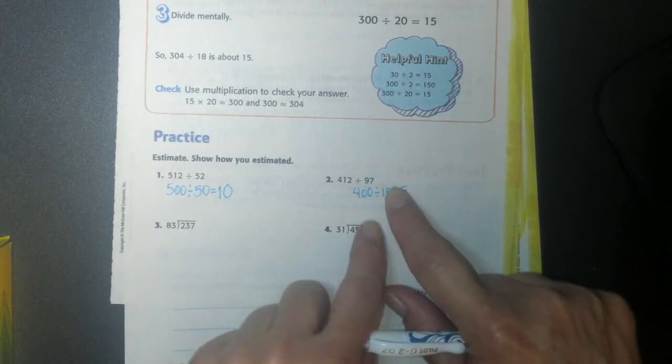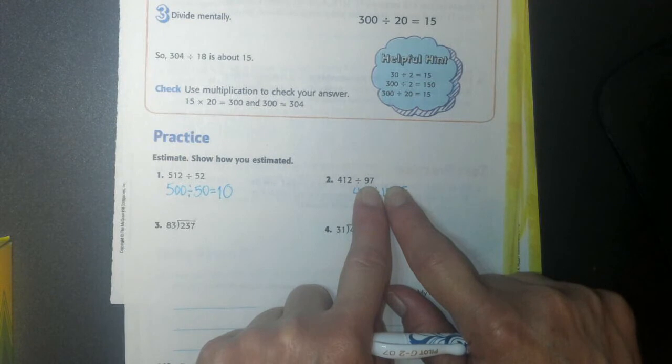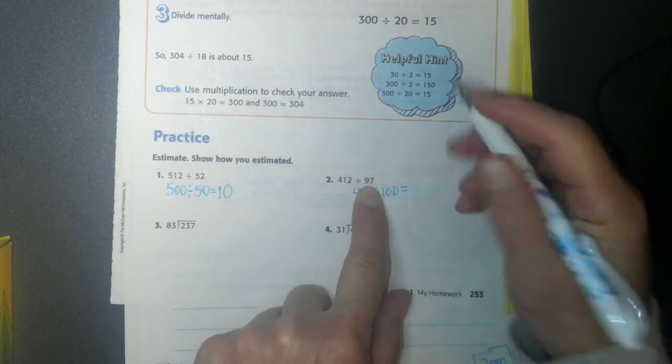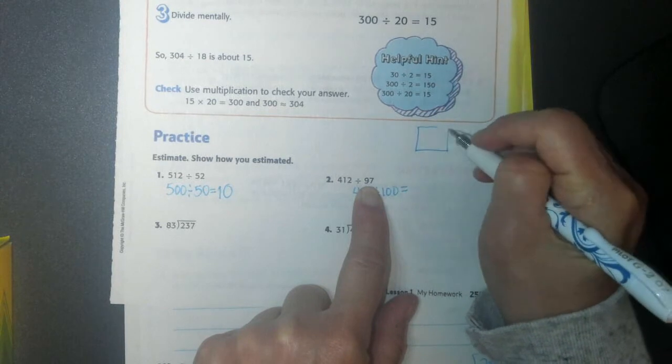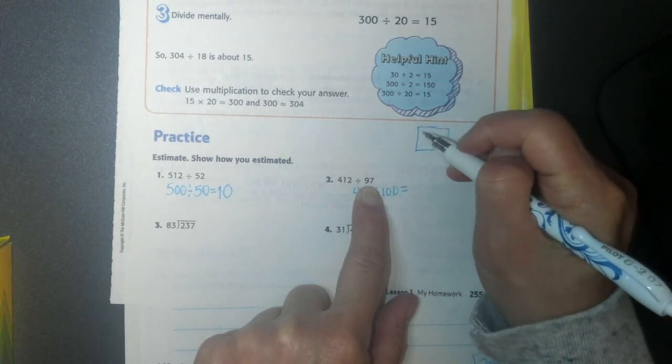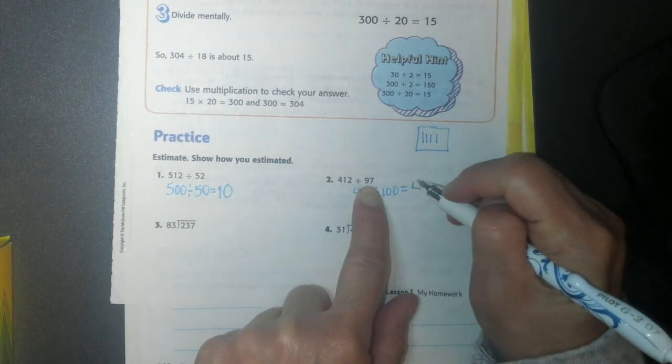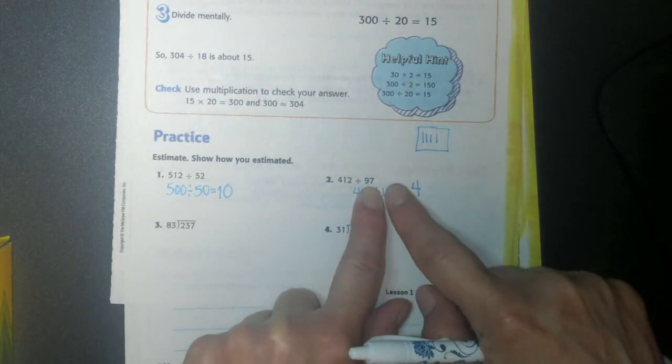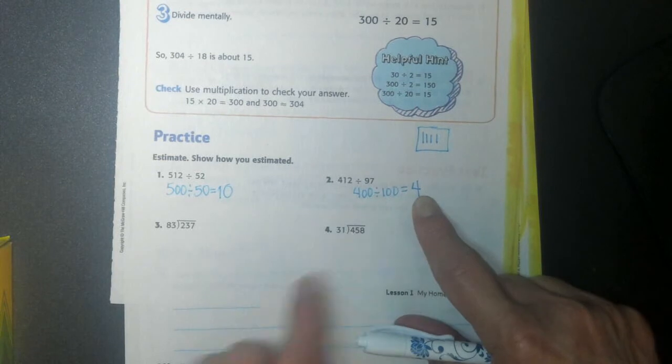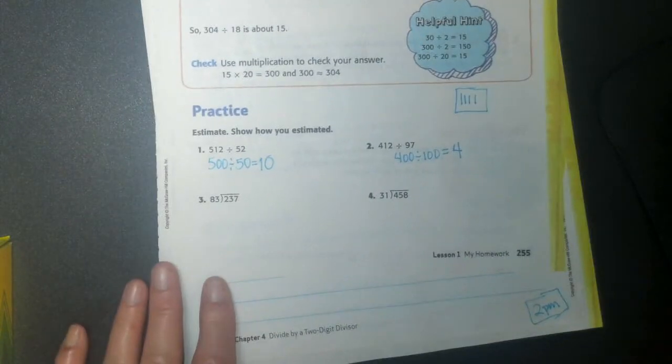So I can also do this, Annalie. I can hide these zeros and I can do 4 divided by 1. So if I have 4 divided by 1, here's my 1. I'm going to divide 4 up into 1, 2, 3, 4. So 4 divided by 1 is 4. So 400 divided by 100 is still 4.